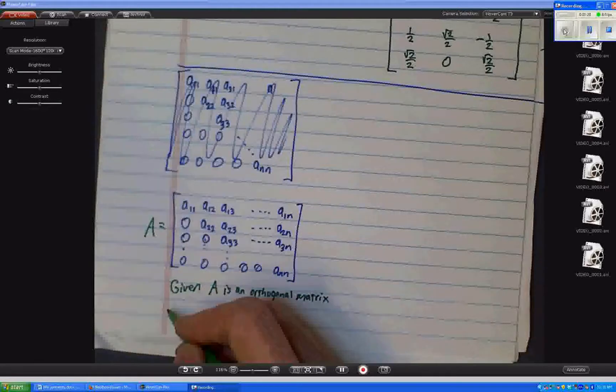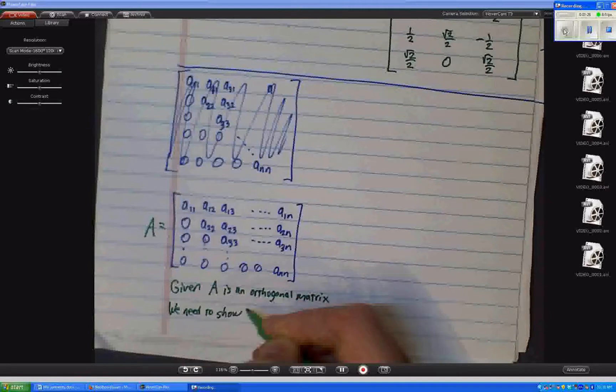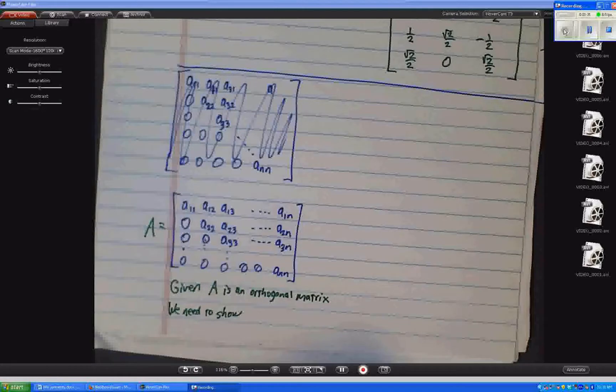And then we need to show, we're trying to show A is upper triangular. No, we're trying to show, it's given it's upper triangular. We're trying to show it's diagonal.